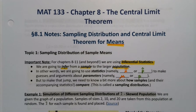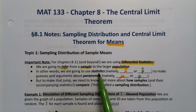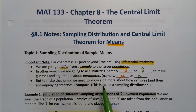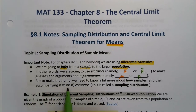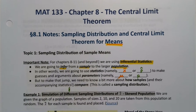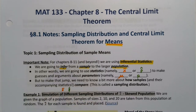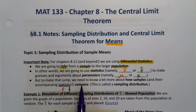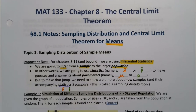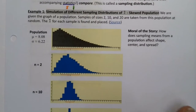If we're going to make that jump and learn how statistics could possibly relate to parameters, we first need to understand how samples and their statistics — X-bar and P-hat — compare from sample to sample to sample. That's what we want to learn about first. It's called the sampling distribution, and we're going to see it through an example, though it's a little hard to get your mind around.